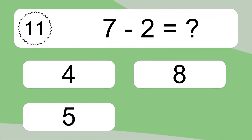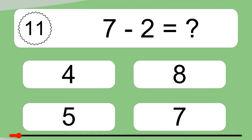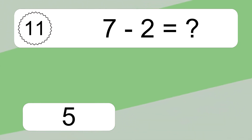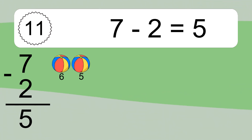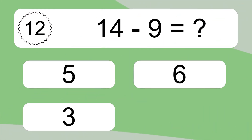7 minus 2 equals what? 7 minus 2 equals 5. Let's count it: 6, 5.